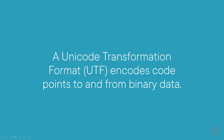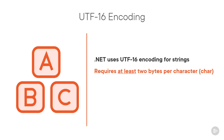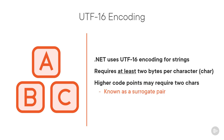A Unicode Transformation Format is a character encoding format that encodes all possible character code points of Unicode. Various formats exist which use different techniques to represent the Unicode code points. In .NET, strings use UTF-16 encoding for the characters. UTF-16 requires a minimum of 2 bytes for each character, even for the basic English letters from the Latin alphabet. The higher code points, such as those used for emojis, may require a second .NET char instance to be able to represent them fully. This pair of characters is known as a surrogate pair. As we now use two char instances, representing such code points requires 4 bytes of memory.